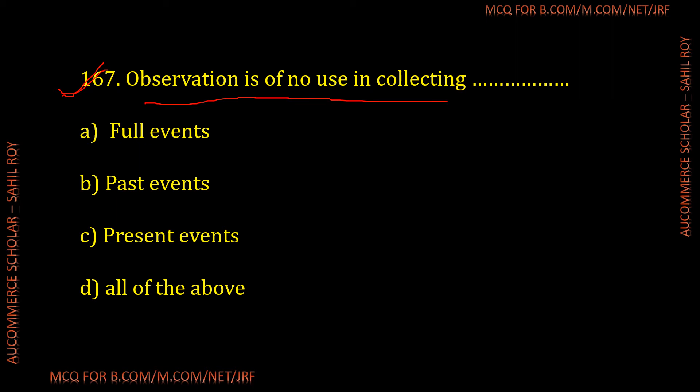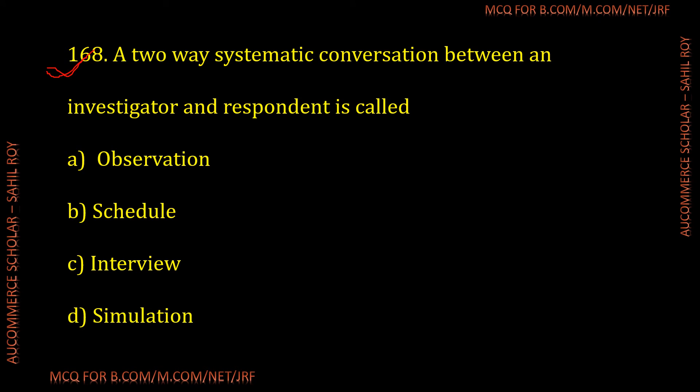Question number 167: Observation is of no use in collecting what? The options are future events, past events, present events, and all of the above. The correct answer is past events — observation is of no use in collecting past events. Option B is the correct answer for the given question.